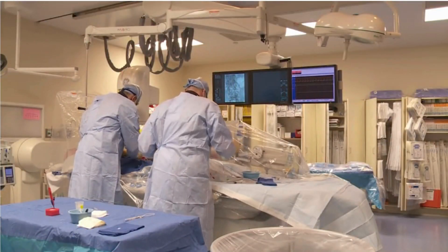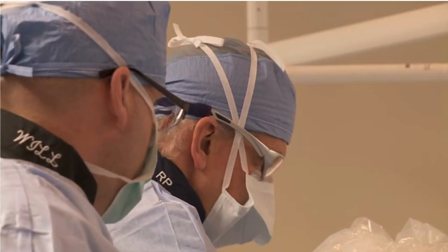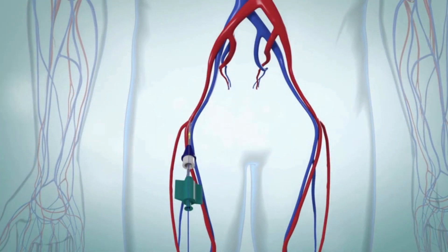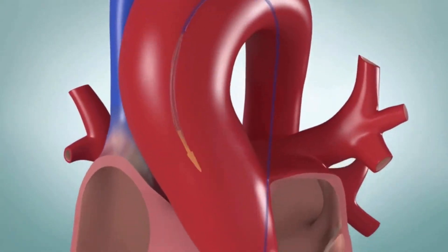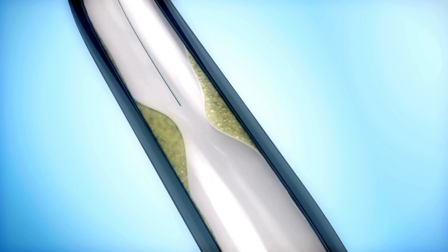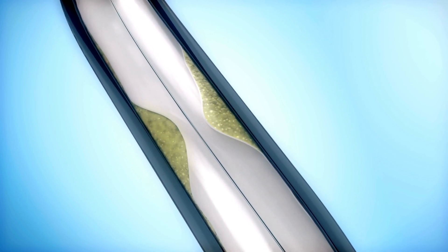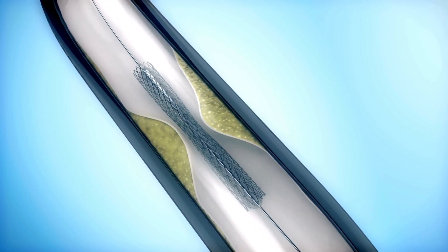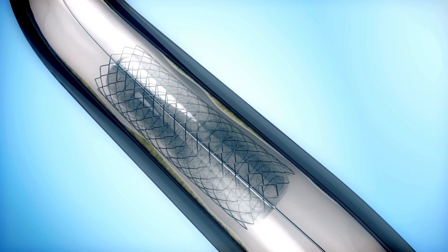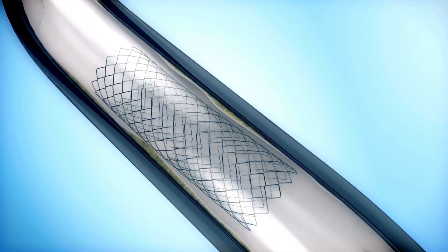The insertion of a heart stent is commonly known as angioplasty. During this minimally invasive procedure, a thin, flexible tube called a catheter is threaded through a blood vessel, usually from the groin or wrist, up to the blocked artery. Once in place, the stent is expanded, pushing the plaque against the artery walls and allowing blood to flow freely.